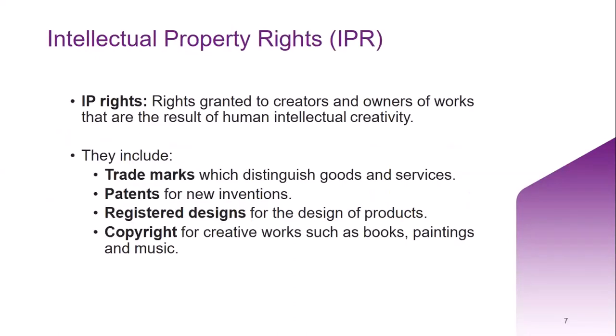Intellectual property is something that you create using your mind — for example, a story, an invention, an artistic work, or a symbol. Types of IP rights include trademarks, patents, designs, and of course copyright, which is what we're focusing on today. Copyright is the protection offered for creative works such as books, music, and literary works. Some types of protection are automatic, and for some you have to apply.